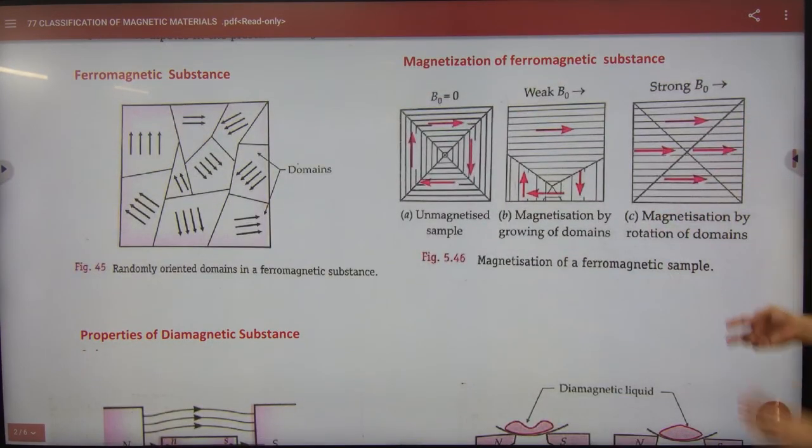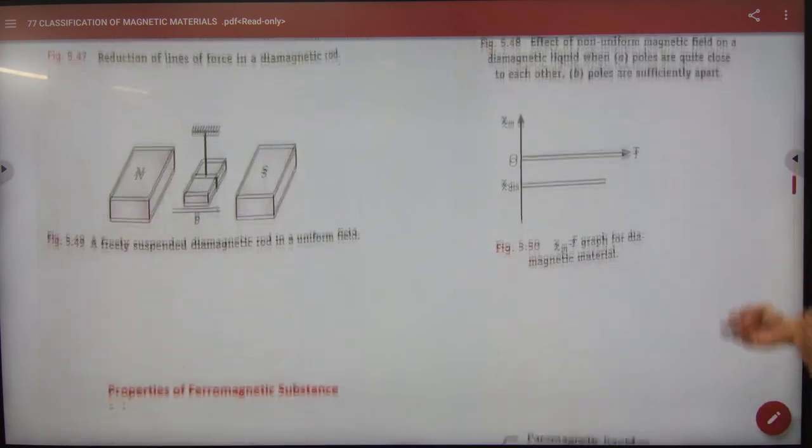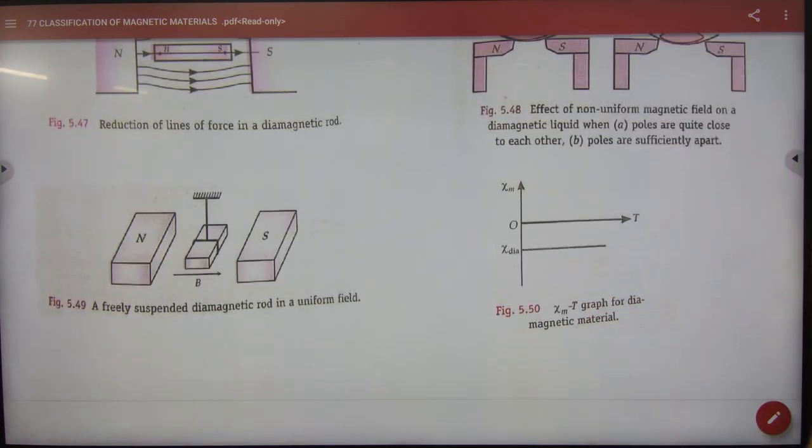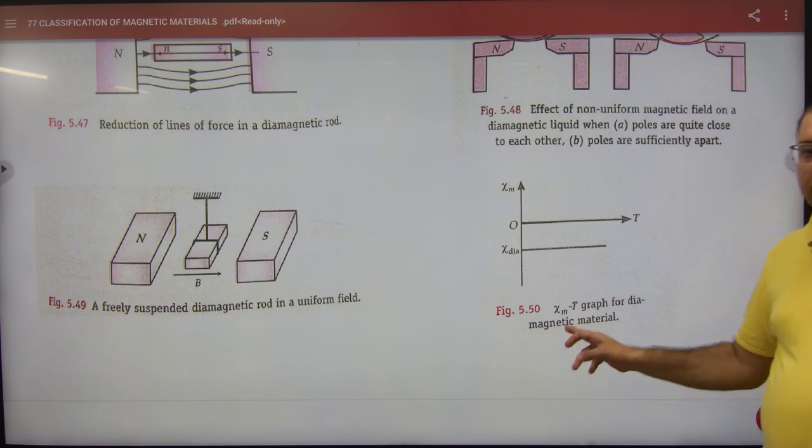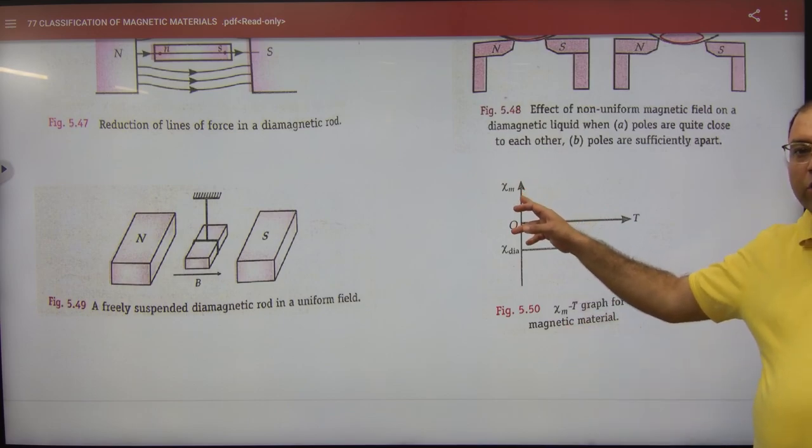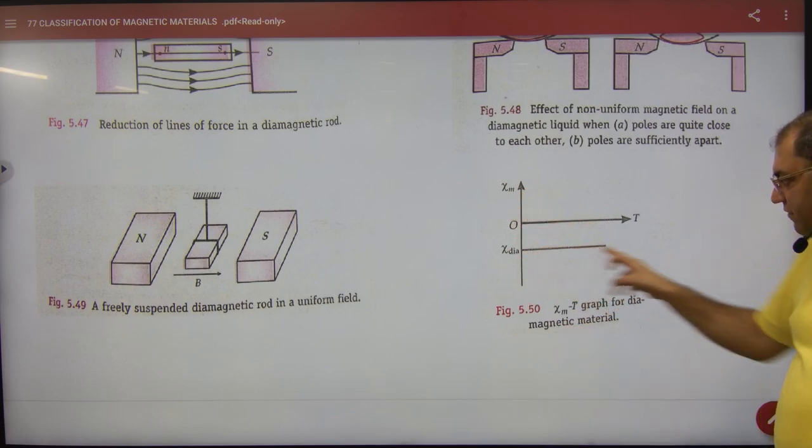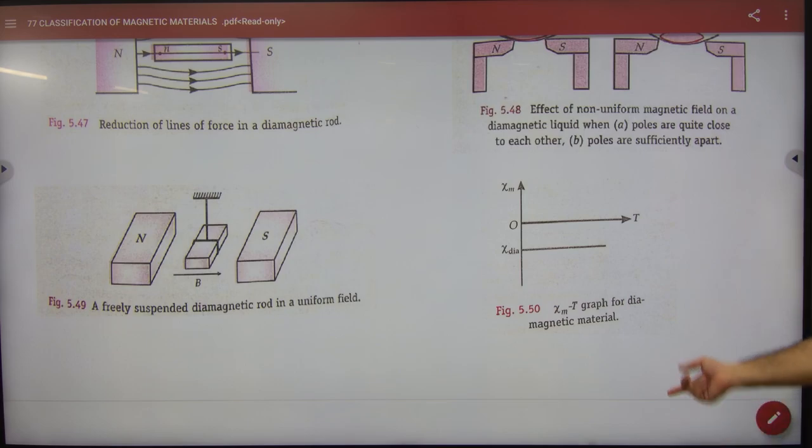We have done the concept of domains. We have done the properties. We have done this graph. You can mark this graph. The diamagnetic substance, what is negative? So this graph becomes negative.